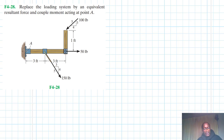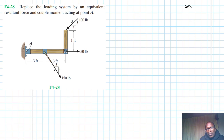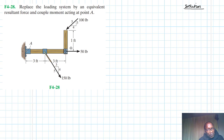Welcome to this screencast. The problem reads: replace the loading system by an equivalent force and couple moment acting at point A. This problem is from the Engineering Mechanics Statics textbook, 13th edition by R.C. Hibbeler. We have a structure loaded by a system of forces, and we need to replace the loading system by an equivalent resultant force and couple moment acting at point A.